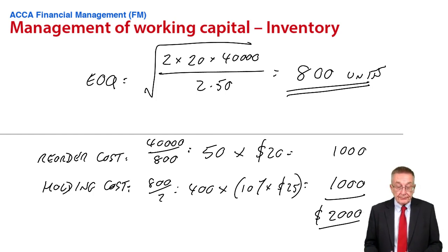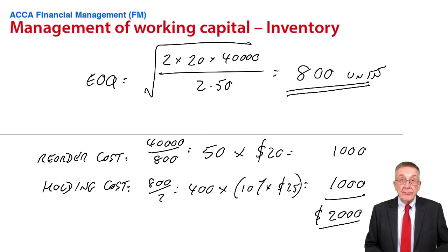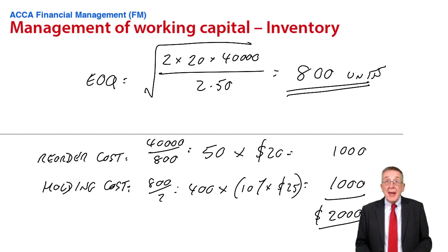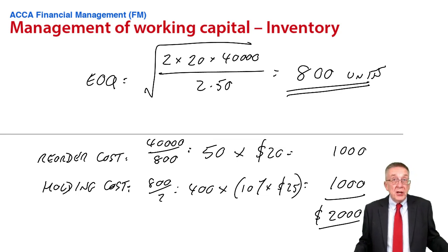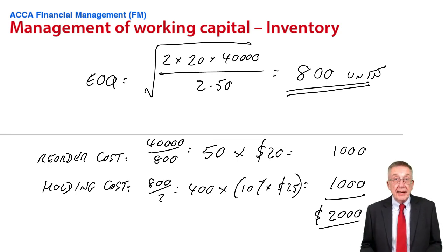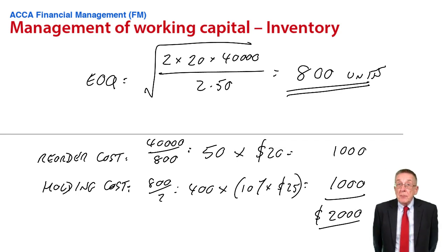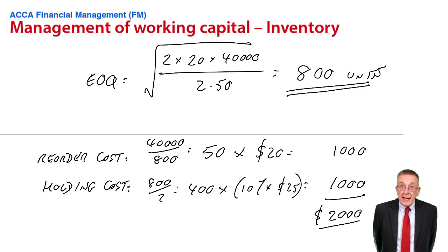That was the order quantity that minimized the total inventory costs over the year and they were minimized at a total of $2,000. We'd ignored how much we were paying for our 40,000 units on the basis that it would be $25 per unit however many you were ordering each time. However, I did say it could make it more fun with what we call quantity discounts. So look at example three.